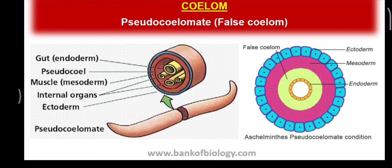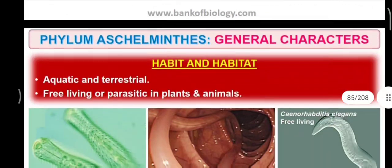These are pseudocoelomates, which means false coelom. Whereas Platyhelminthes are acoelomates — no coelom there. But in Aschelminthes, there is no true coelom; that cavity is filled with mesogleal cells, and that is the reason it is called a pseudocoelomate.